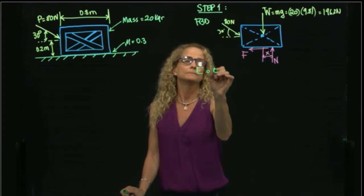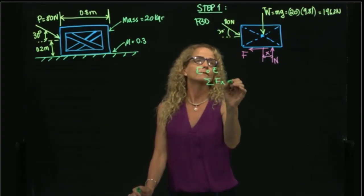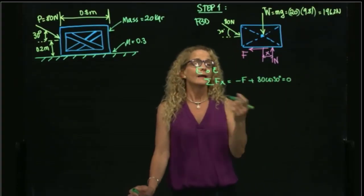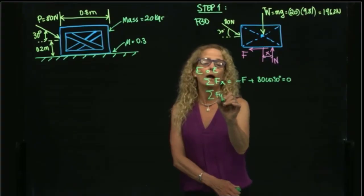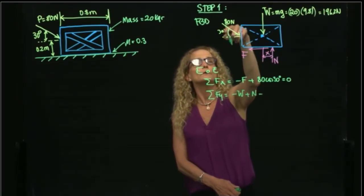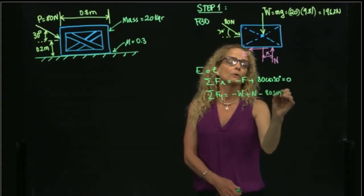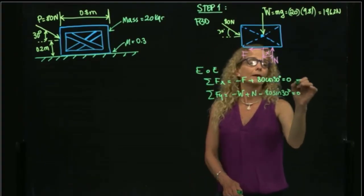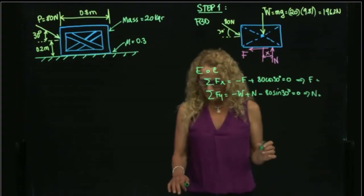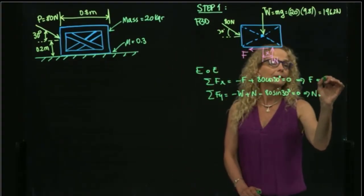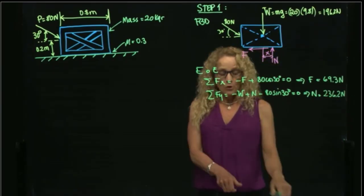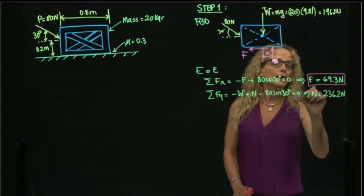Once I have the free body diagram, I do my equations of equilibrium. Sum of forces in X equals zero gives me: negative F plus 80 cosine of 30 equals zero, which lets me find F. Sum of forces in Y equals zero gives me the weight, the normal force, minus the component of the applied force in the Y direction, which is 80 sine of 30. From these equations, F is 69.3 Newtons and N is 236.2 Newtons.